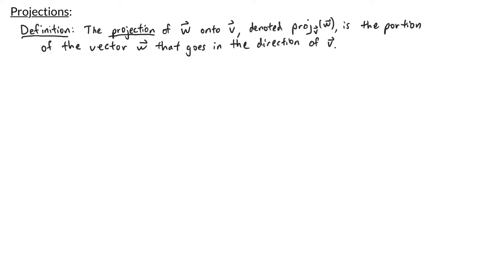In this video we'll be talking about the projection of vectors. The projection of w onto v is the portion of the vector w that goes in the direction of the vector v.